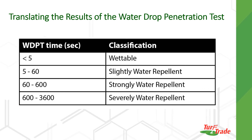Once you have all the measurements recorded, you can look at what those numbers mean. There's a chart that will help you translate the results. What I do, especially if you set up a spreadsheet in Excel and put all those numbers in, is color code them. Soil cores that are wettable — less than five seconds — maybe I'll make them blue. Those that are slightly water repellent — 5 to 60 seconds — maybe I'll make them green. Strongly water repellent, maybe they're yellow. Severely water repellent, maybe they're red.